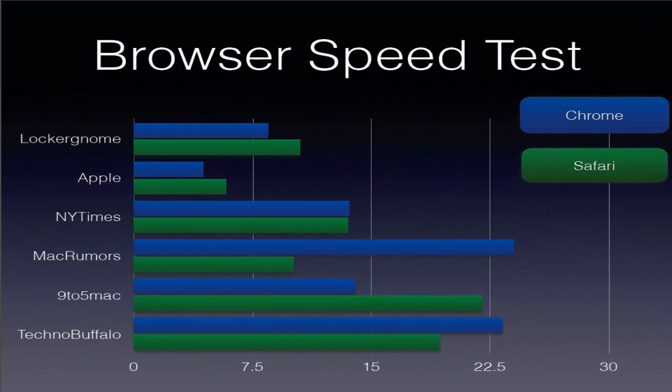So guys, these are not what you'd call consistent results. As far as the JavaScript benchmark results are concerned, if you look at these real-world results after those tests, it's really difficult to understand — because Chrome, even without the Nitro JavaScript engine, was actually a lot better on some websites, for example apple.com and lochnome.com. And 9to5mac.com took about 14 seconds on Chrome while it took Safari 22 seconds. That was my comparison between Safari and Google Chrome.